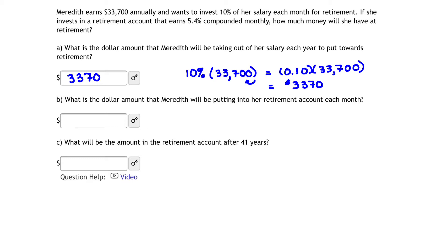All right, let's move on to question B. What is the dollar amount that Meredith will be putting into her retirement account each month? Again, this is another simple question. We just have to put our thinking caps on. So if we know that each year Meredith is investing $3,370, how much is she going to be investing each month? Well, for this question, we're simply going to take $3,370 and divide by the total number of months in a year, which is 12.